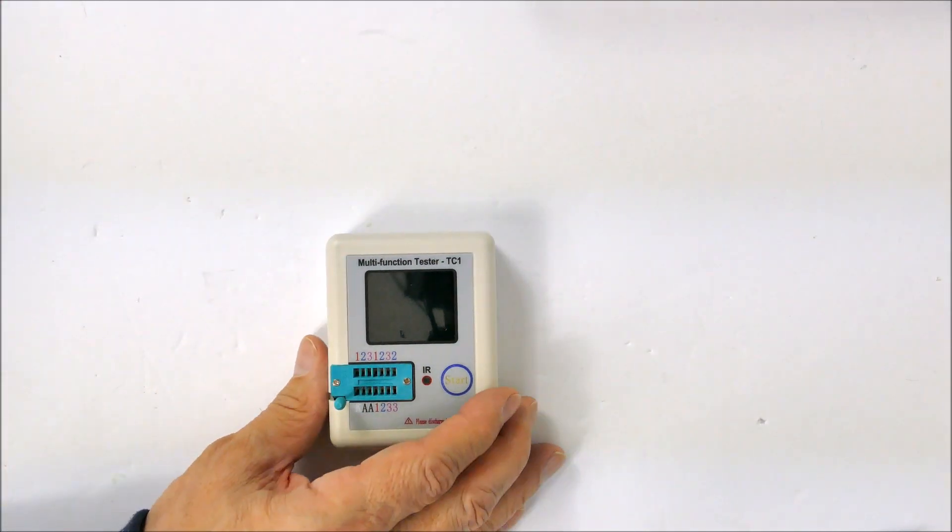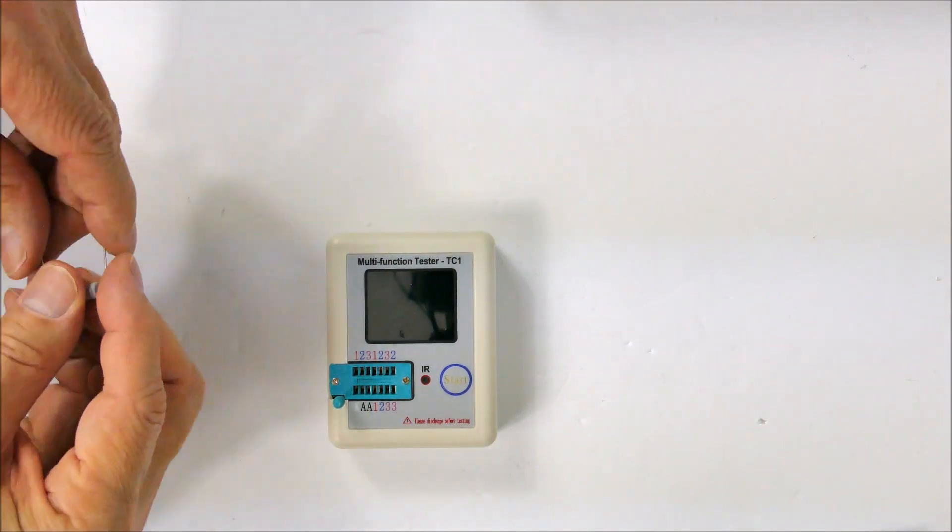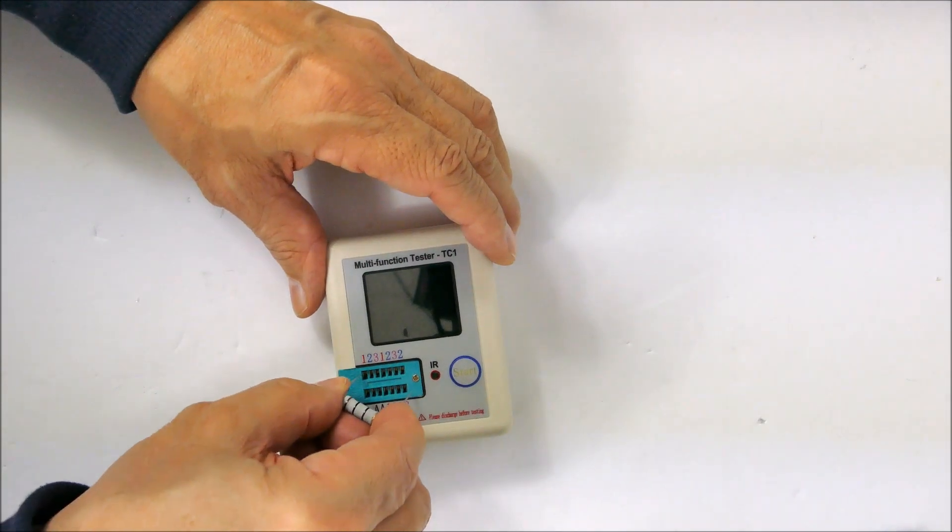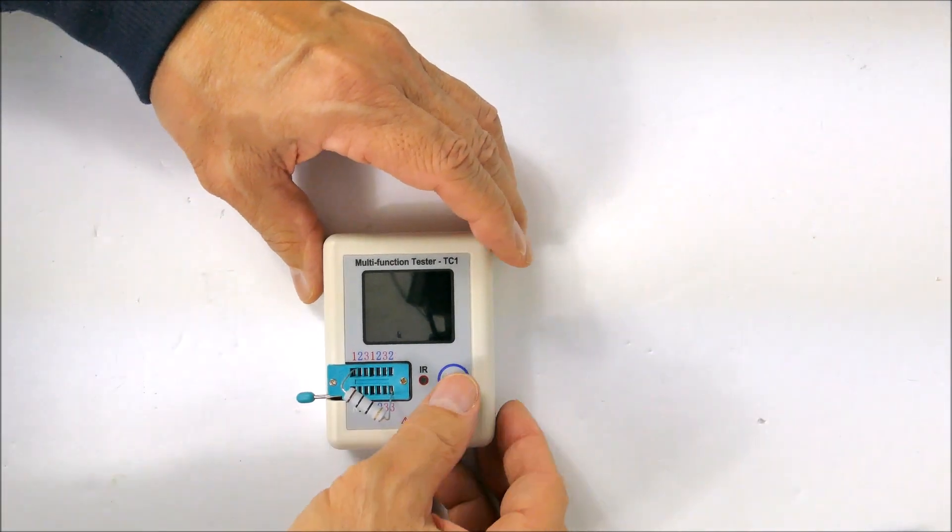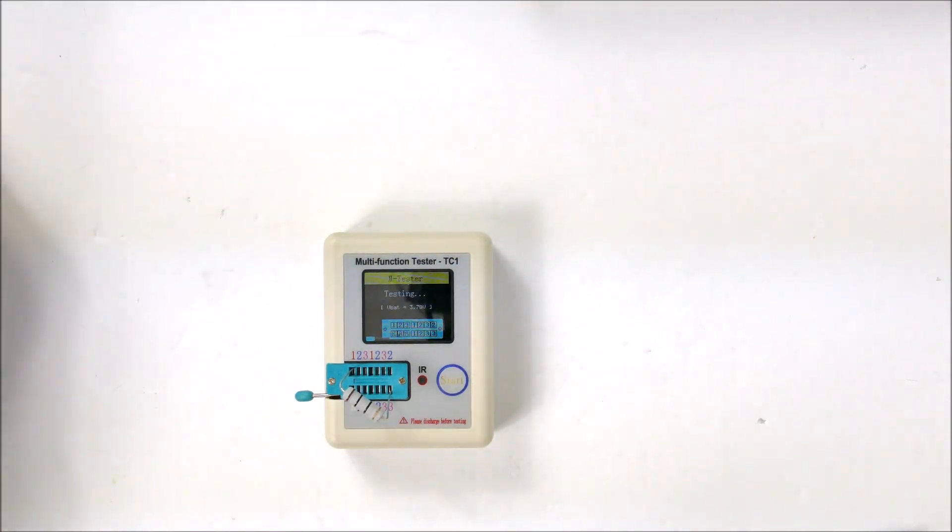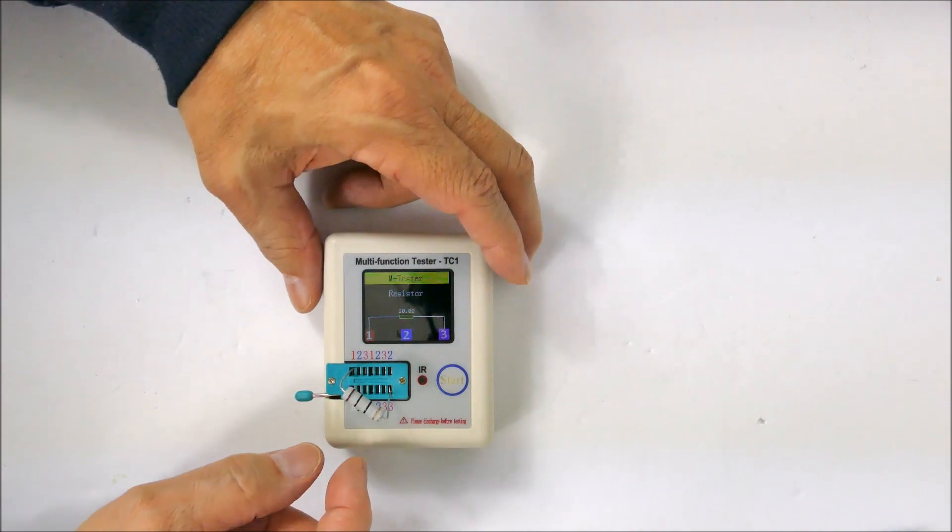This thing is coming in very handy because right now I'm testing transistors which I actually need to use. Let's try a resistor here though, a known value. 10.0 ohms, that's what this resistor has marked on it, so it's very cool.